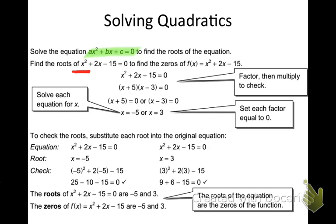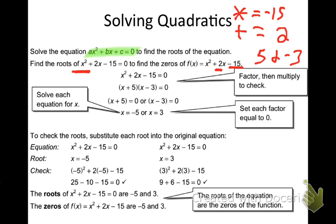When we factor, we want to think of two things: we want two numbers that multiply to get C — the constant — and add to get B, the linear term. For example, multiply to get negative 15 and add to get 2. The answer is 5 and negative 3, because 5 times negative 3 is negative 15, and 5 plus negative 3 is 2. So I rewrite it as (x+5)(x-3). That's the backwards form of foiling — if I foiled this, I'd get x squared plus 2x minus 15.